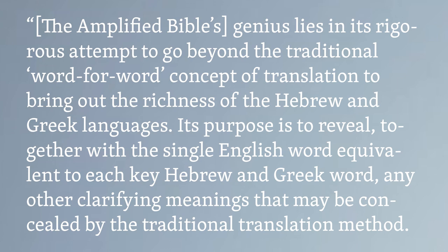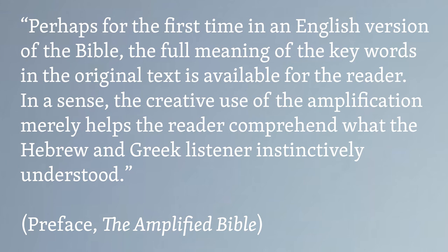The additions are clearly marked off in brackets and parentheses, so that wouldn't be so bad. But it turns out the Amplified thinks it's shooting at a higher target than just clarification and commentary. The preface explains its fulsome parenthetical interpolations: 'The Amplified Bible's genius lies in its rigorous attempt to go beyond the traditional word-for-word concept of translation to bring out the richness of the Hebrew and Greek languages. Its purpose is to reveal any clarifying meanings that may be concealed by the traditional translation method.' This, I'm afraid, is bad.